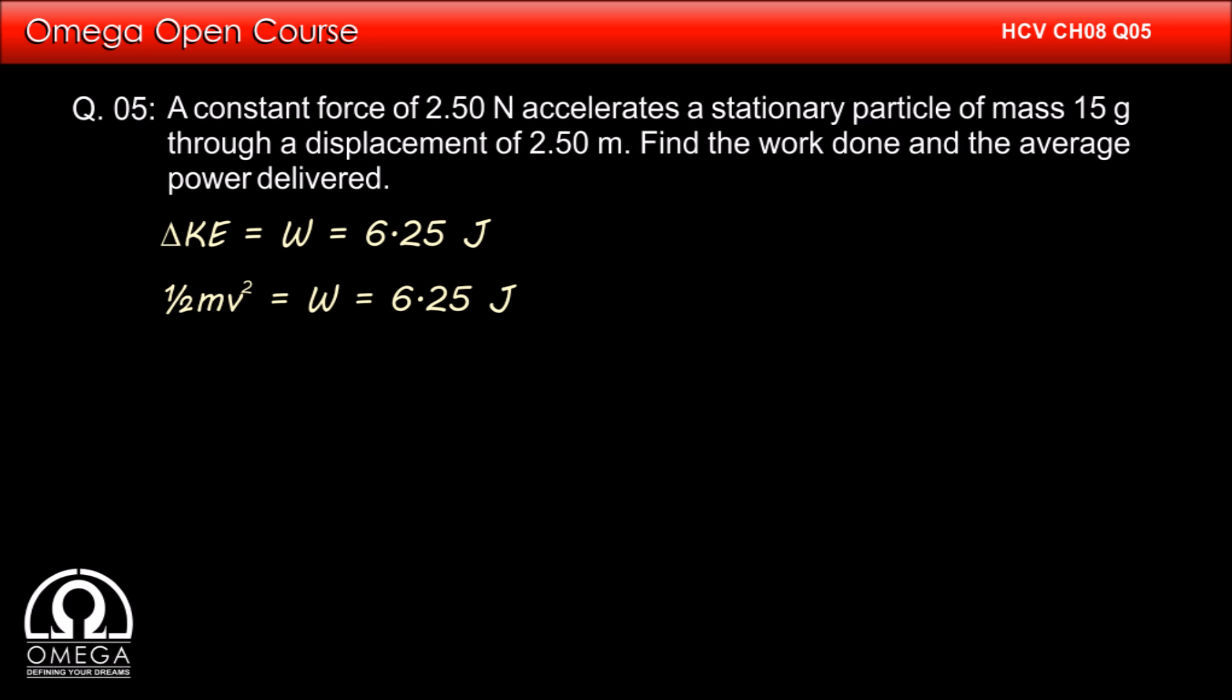If v is the final speed of the particle then half mv square is equal to 6.25 Joules. Putting the value of mass, we get half into 15 × 10⁻³ × v square is equal to 6.25 or v square is equal to 2 × 6.25 × 10⁻³ divided by 15.